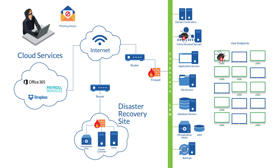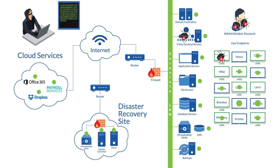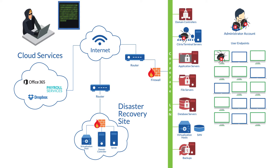Once a cybercriminal gets a hold of an administrator account, they'll run scripts to find a list of users and computers, pinging every device on the network to see what is active. Then they'll start deleting backups, dismounting and encrypting your databases, encrypting your servers, wiping out your virtualization hosts, destroying the DR environment, and encrypting any PC that's on.